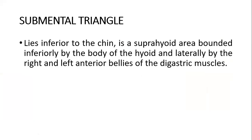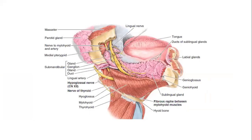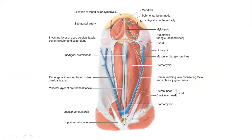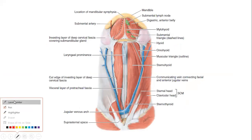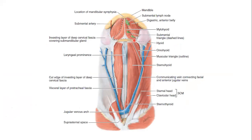First of all, we get the submental triangle. So you see the diagram — this is the submental triangle. The apex is at the symphysis menti. This is the mandible, and this is the symphysis menti. So the apex is formed at the symphysis menti, and the base is the hyoid bone. The lateral borders are formed by the anterior belly on each side — the anterior belly of the digastric.